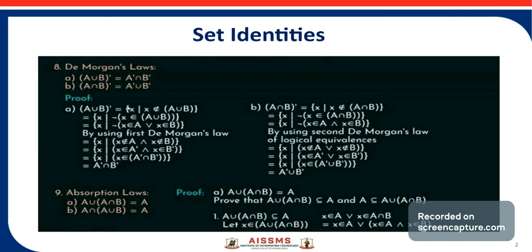Now we will discuss the first De Morgan's law: (A union B) complement. A union B complement is nothing but the set of all X such that X does not belong to A union B. We can write 'X does not belong to A union B' as the negation of 'X belongs to A union B'.